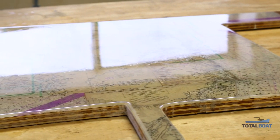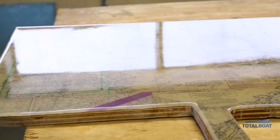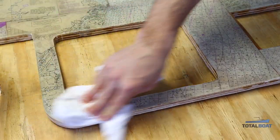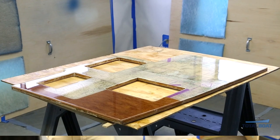We'll let this cure overnight, then we'll take the rim off, remove the tape, and sand the edges. We'll use some soap and water to clean any amine blush that's on the surface, and here we have our finished galley countertop.